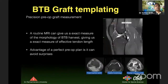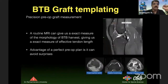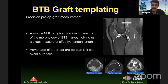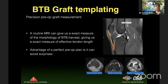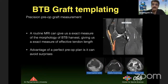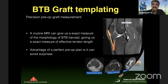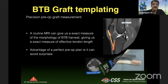BTB graft templating is very important. Precise pre-operative graft measurement with a routine MRI can give us the exact morphology of the tendon, the bone plug, effective tendon length, and the tibial bone plug, so that we can avoid surprises at the table.